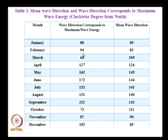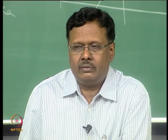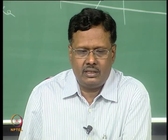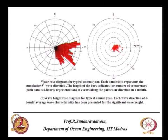We also find out the direction from north. Between 80 and 94 degrees the waves are coming from the east, and at 180 degrees from the south. There are two directions given: mean wave direction and wave direction corresponding to maximum wave energy. The figure on the left is a wave rose diagram and the figure on the right is called a wave height rose diagram.